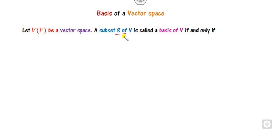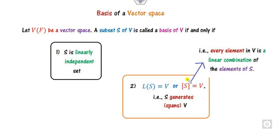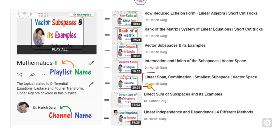A basis: any subset S of the vector space V over the field F is called a basis if S is linearly independent (LI) and is a span — meaning every element of V can be written in terms of the elements of S. We already discussed how to solve these two topics with the help of various examples, including linear span and linear independence with four different shortcut methods.